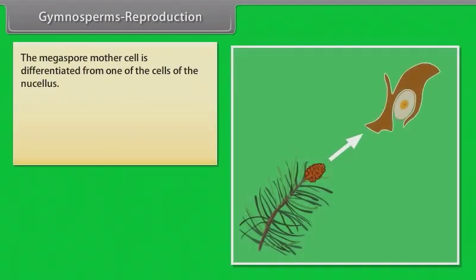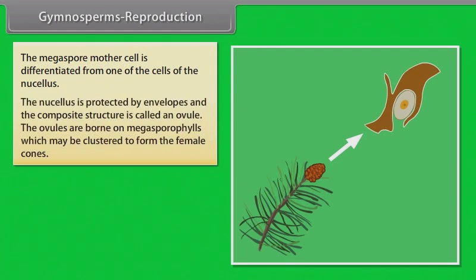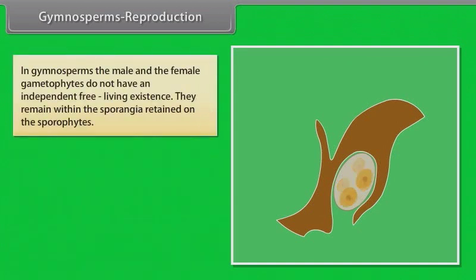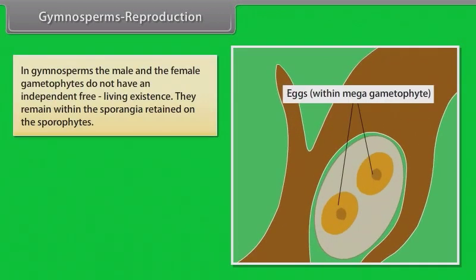The megaspore mother cell is differentiated from one of the cells of the nucleus. The nucleus is protected by envelopes and the composite structure is called an ovule. The ovules are borne on megasporophylls which may be clustered to form the female cones. The megaspore mother cell divides meiotically to form four megaspores. One of the megaspores develops into a multicellular female gametophyte that bears two or more archegonia or female sex organs. In Gymnosperms the male and the female gametophytes do not have an independent free living existence. They remain within the sporangia retained on the sporophytes.